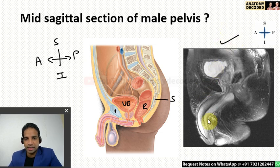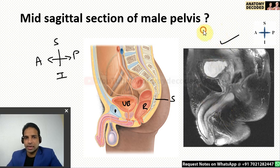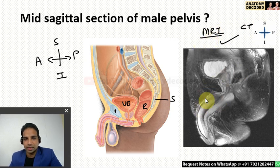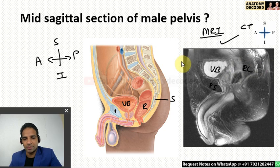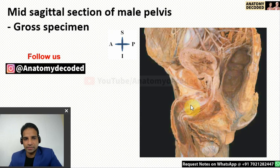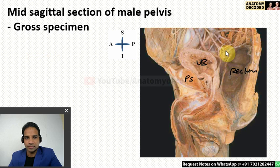This is an MRI image of the mid-sagittal section of the male pelvis. Whenever we learn about soft tissue structures, MRI is referred to, while for bony structures, CT scan is referred to — soft tissues are more clearly seen in MRI. Here we can see the genitalia, the pubic symphysis, and the urinary bladder. The rectum is not seen very clearly in this MRI image. Let us also see a gross specimen of the mid-sagittal section of male pelvis. Here we can see the pubic symphysis, then urinary bladder, and this is the rectum. Between the rectum and urinary bladder there will be the rectovesical pouch.